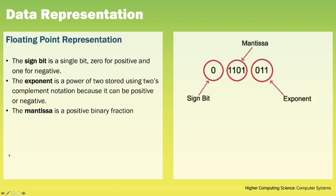When storing binary numbers in floating point representation there are three parts. The sign part is a single bit indicating whether the number is positive or negative. The exponent is a power of 2 stored using 2's complement because it can be positive or negative. The mantissa is the positive binary fraction. Here we have the example 0 1 1 0 1 0 1 0 1 1, and looking at the sign bit we know this is a positive number.